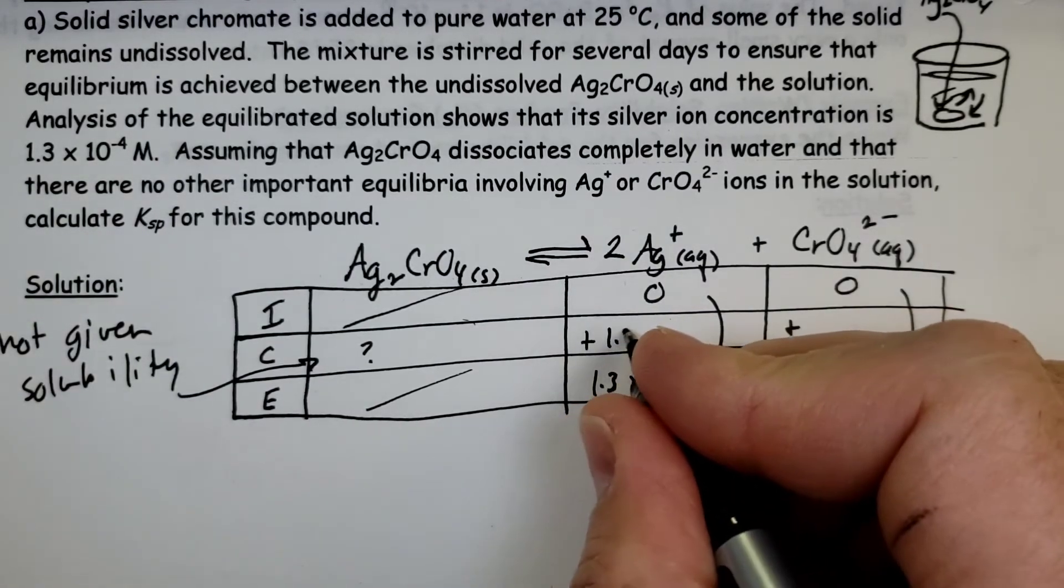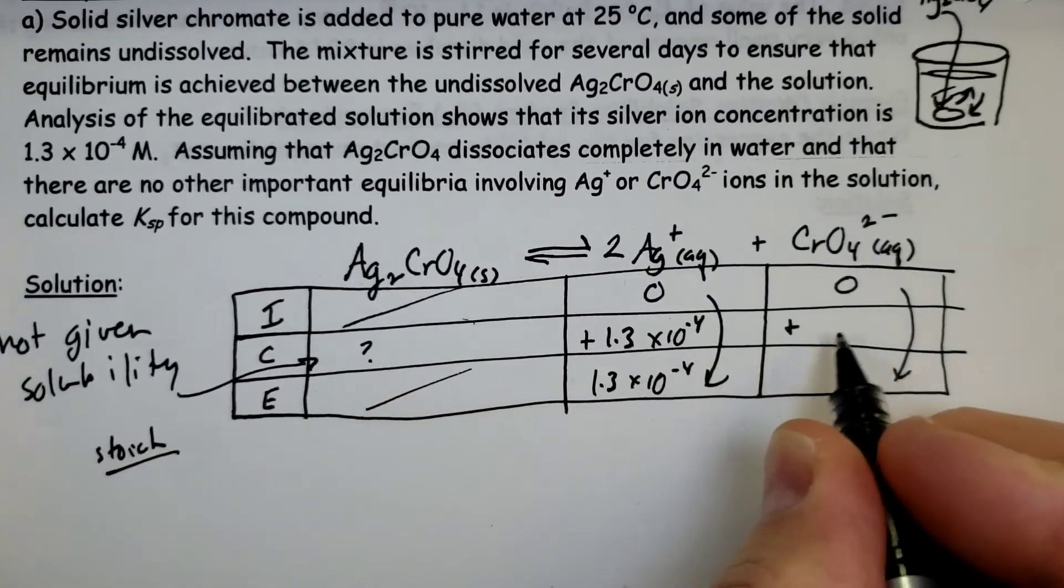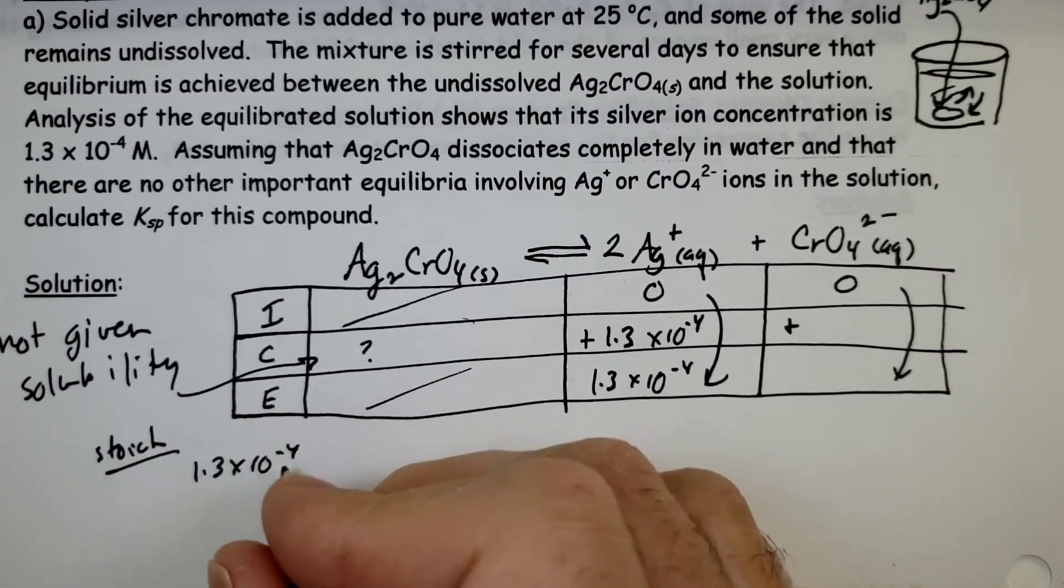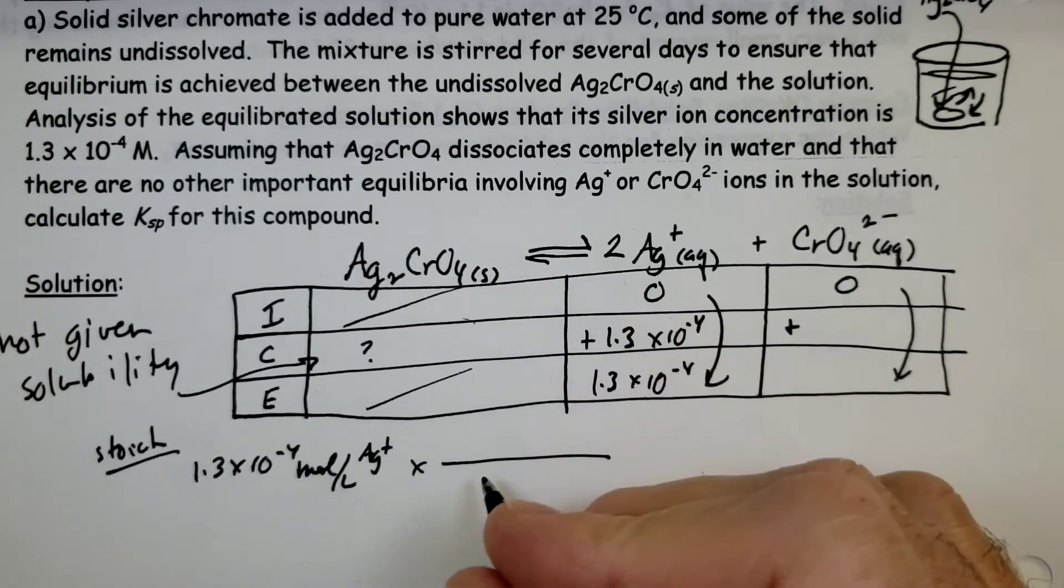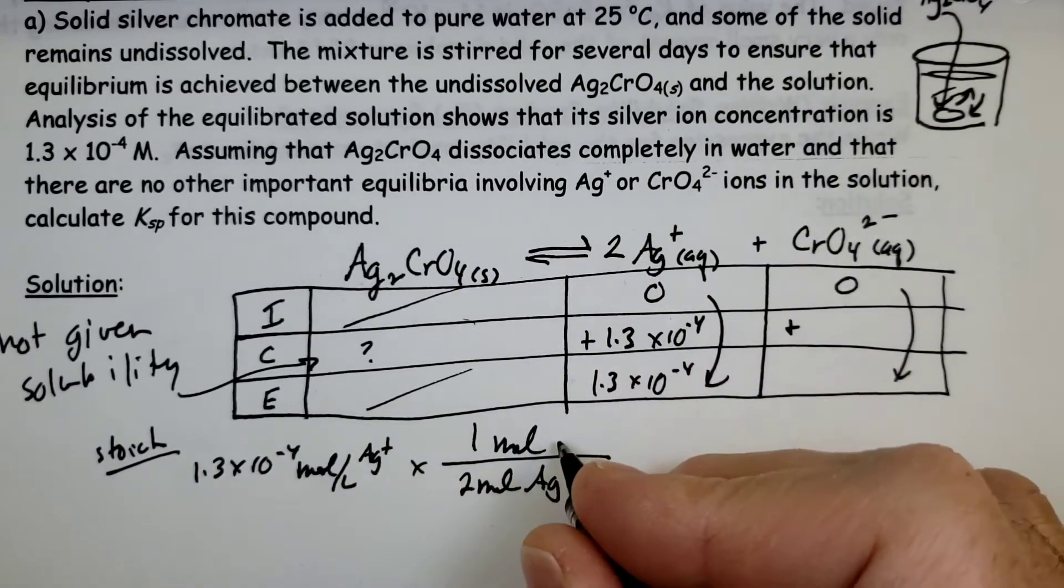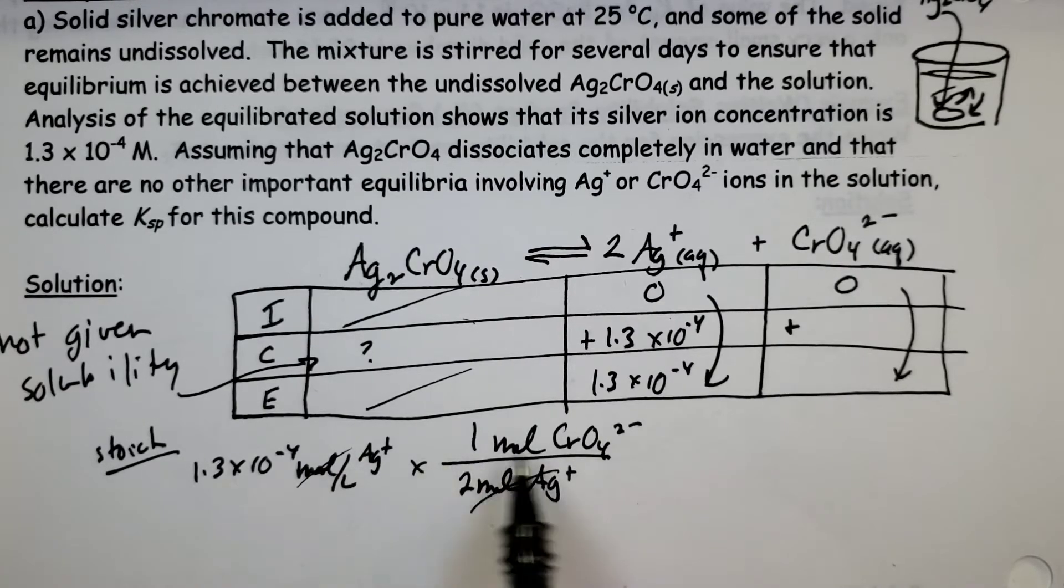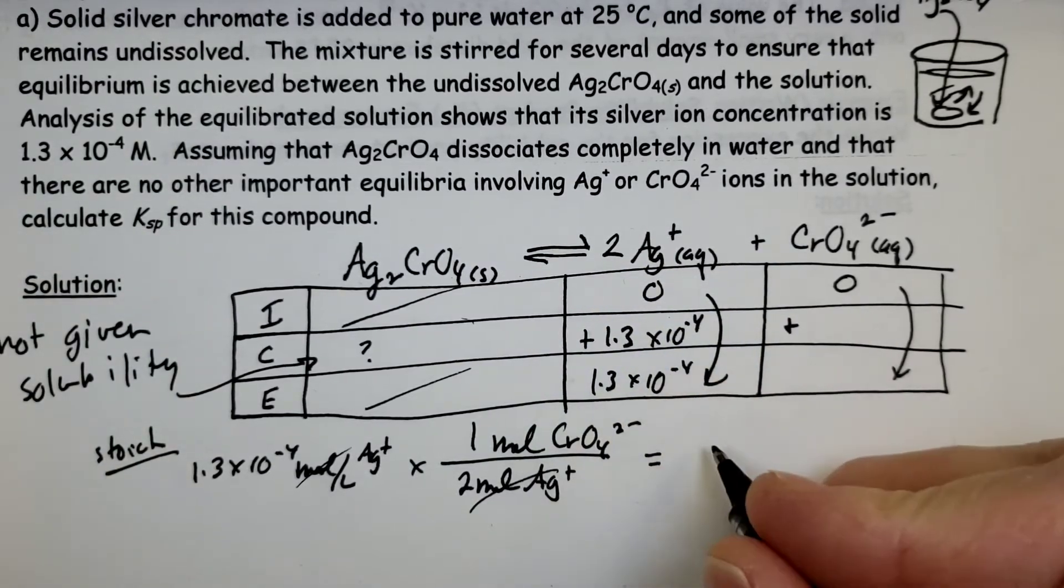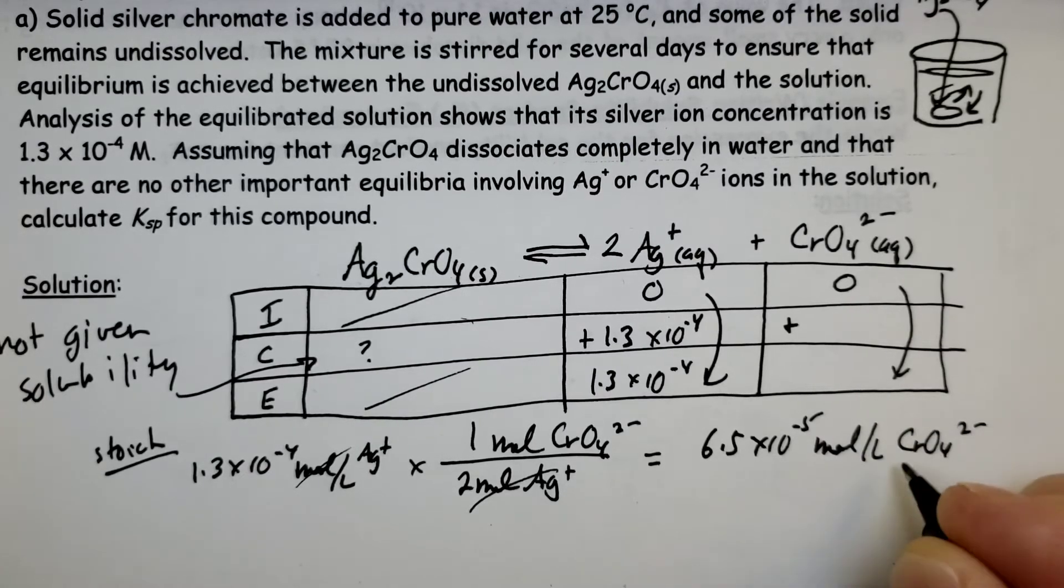To go from zero to 1.3, silver increased by that amount. If we use a little bit of stoich here, we can figure out what change happened to the chromate ions. For every 1.3 times 10 to the minus 4 moles per liter of silver, if I look at the mole ratio here, for every two moles of silver that's formed, there's one mole of chromate that's formed. So moles of silver cancel and moles per liter of chromate ion - you can see that 2 to 1. This works out to be 6.5 times 10 to the minus 5 moles per liter of chromate formed.